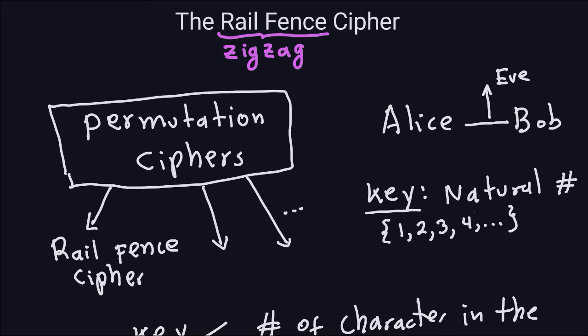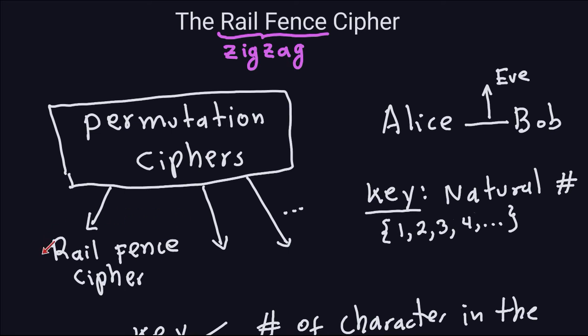The rail fence cipher, or the zigzag cipher, is one particular case of a permutation cipher that is going to allow us to do the encryption in an easy way. This rail fence cipher is just one particular case of a permutation cipher that allows us to rearrange the letters. There are of course also other permutation ciphers that use another method to rearrange the letters. But for now let's just look at this one — the rail fence cipher.